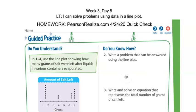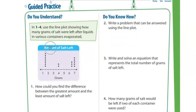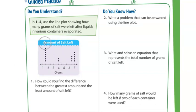Our learning target is: I can solve problems using data in a line plot. Remember, data is just information collected about something. On questions one through four, we're focusing on the data of salt left, and our unit is grams. We're going to use the line plot showing how many grams of salt were left after liquids in various containers evaporated. Remember, a line plot needs a title and a unit, and we always start with the smallest amount and end with the largest amount.